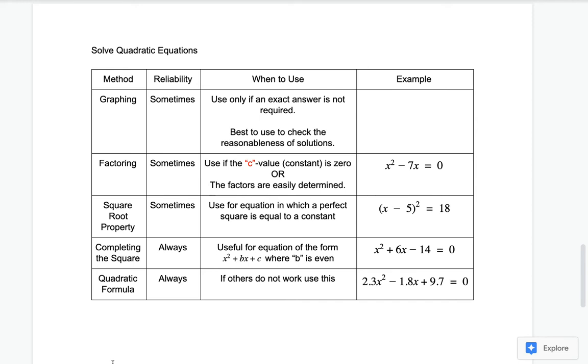So on the right there, there's x squared minus 7x. There's no c value, so that one you can factor an x out very quickly.